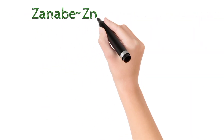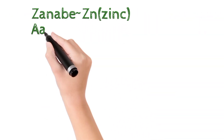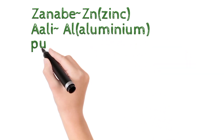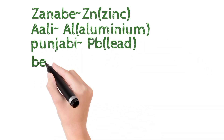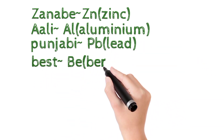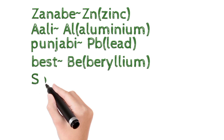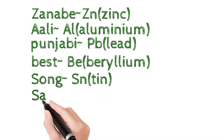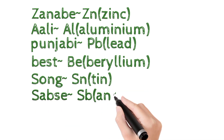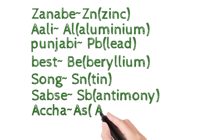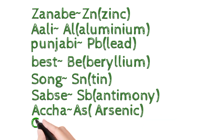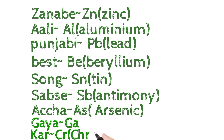Here, 'Janabe' denotes Zinc, 'Ali' denotes Aluminium, 'Punjabi' denotes Lead, 'Best' Si denotes Beryllium, 'Song' Si denotes Tin, 'Tab Se' denotes Antimony, 'Achcha Se' denotes Arsenic, 'Gaya Se' denotes Gallium, and 'C.R.' denotes Chromium.